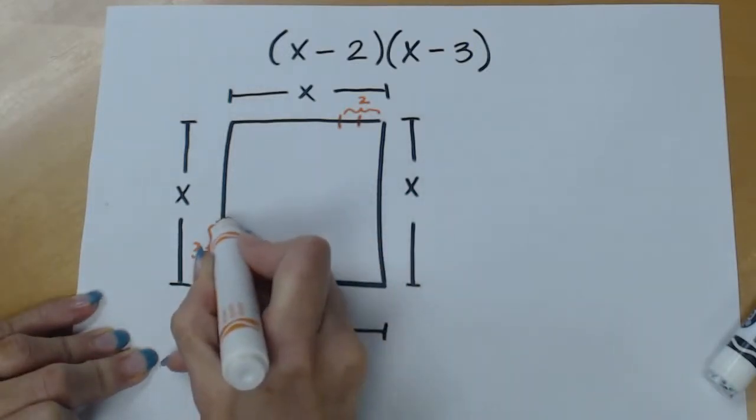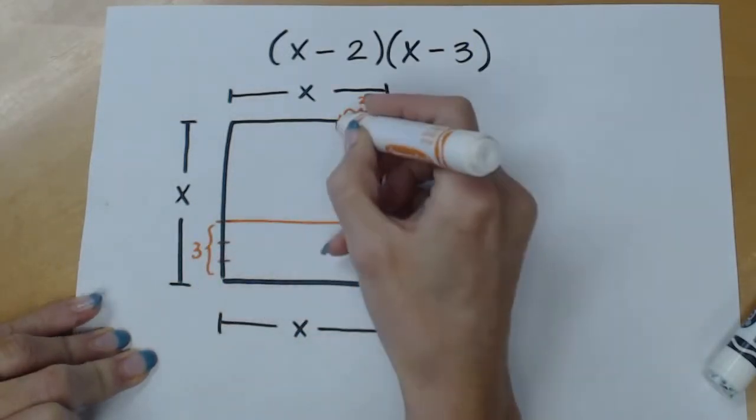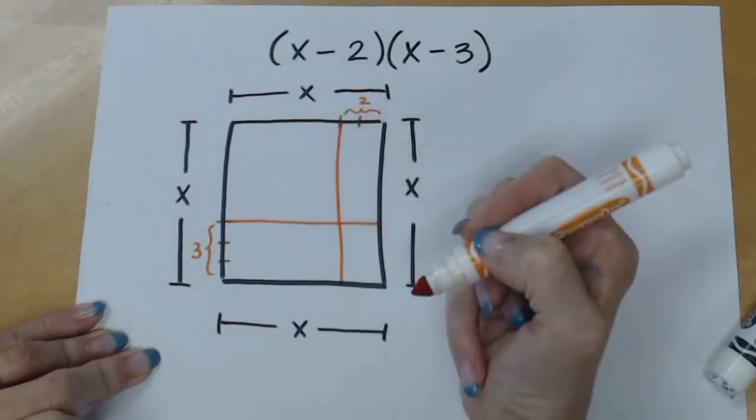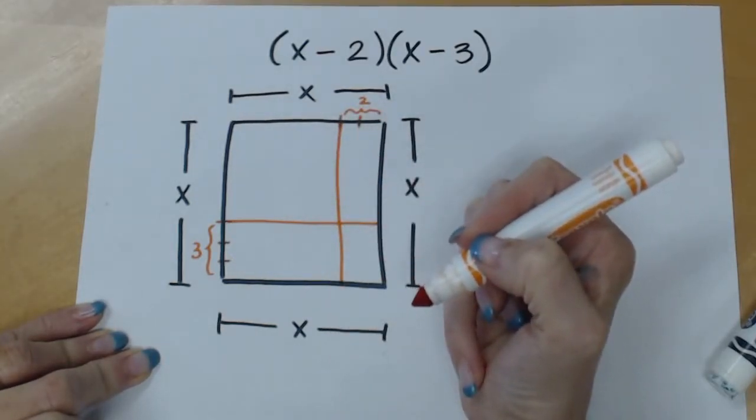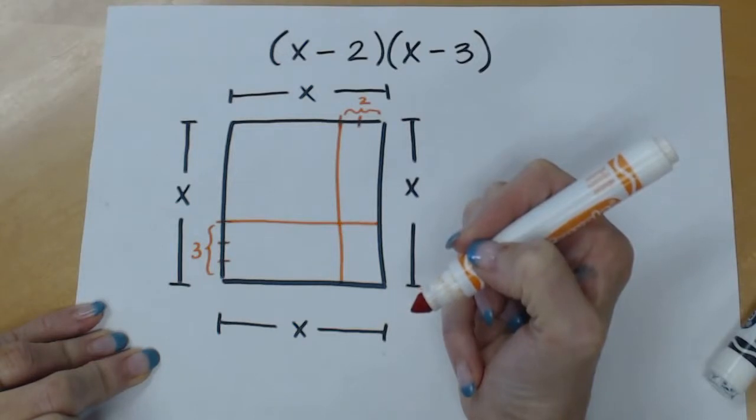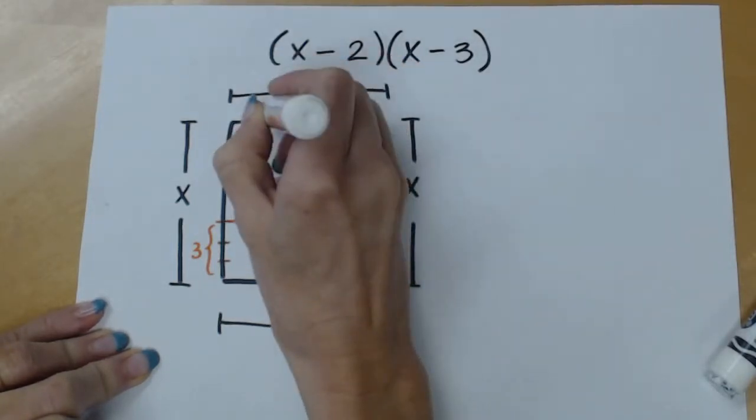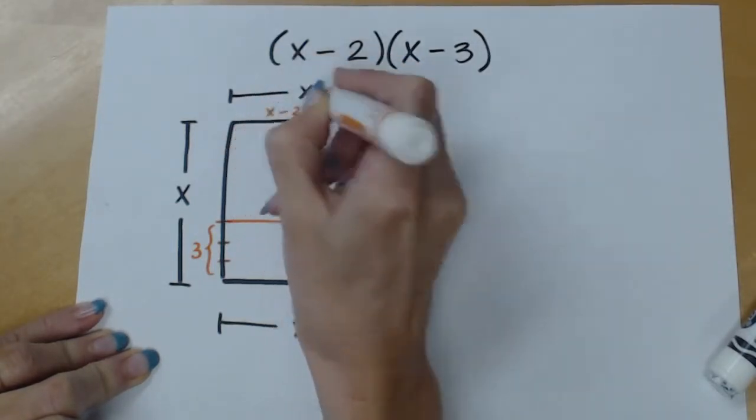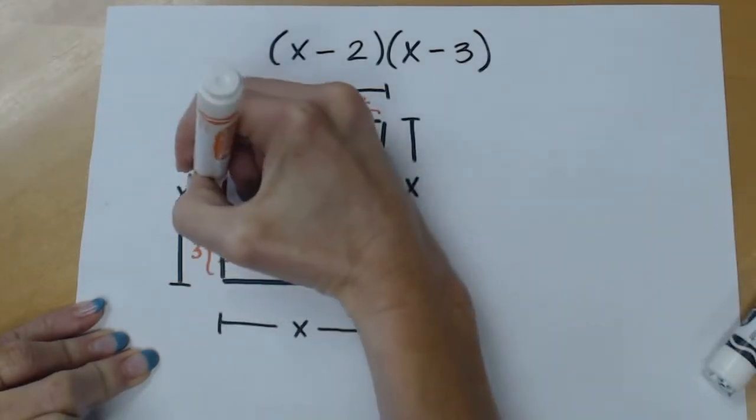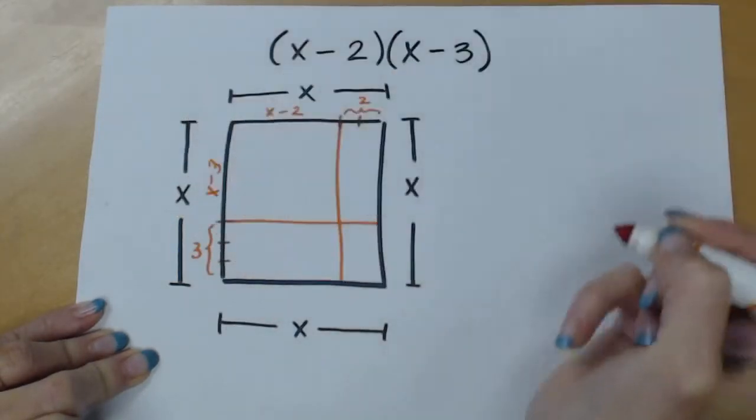When we do that we can create a partition. Scratch that, our pieces aren't equal. We can decompose the x into an x minus 2 piece and a 2, and a 3 and an x minus 3 piece.